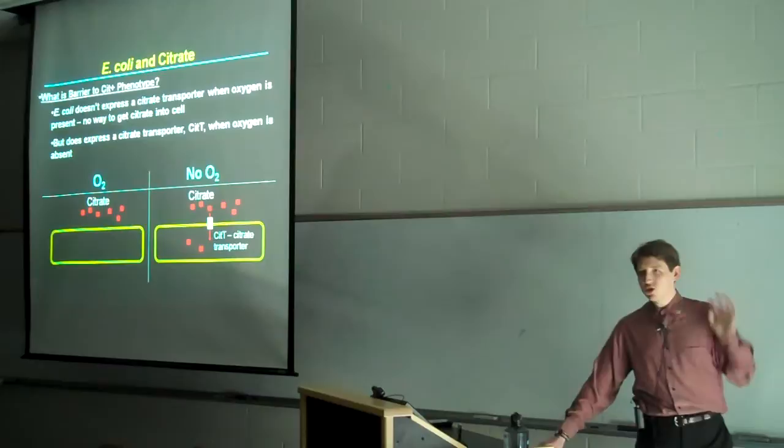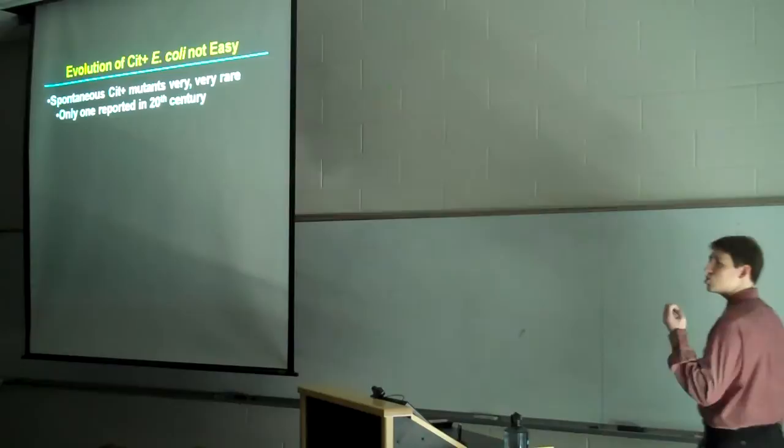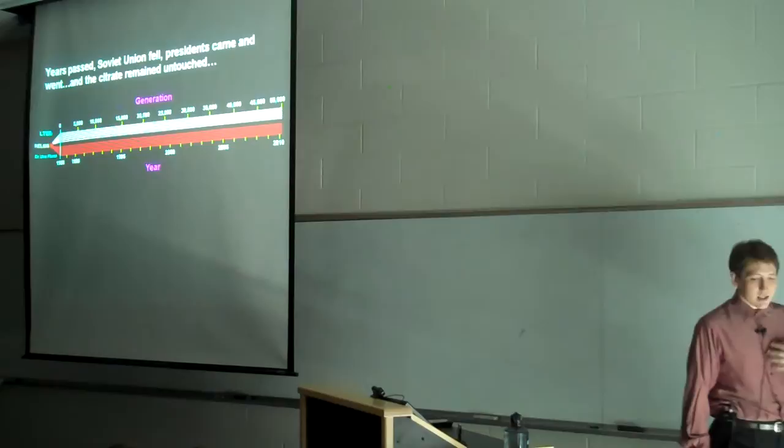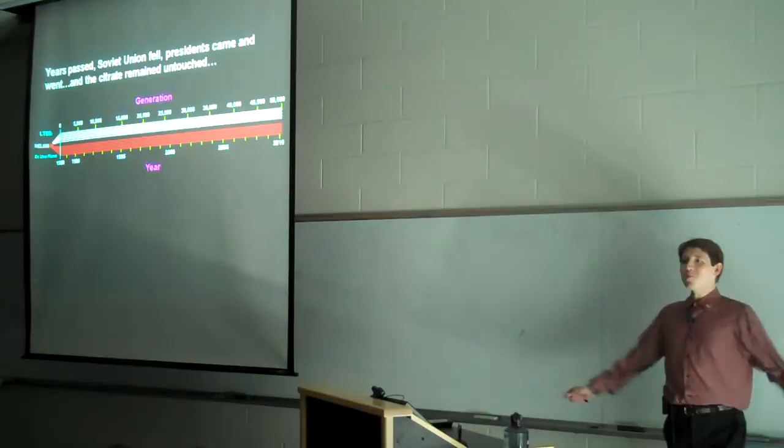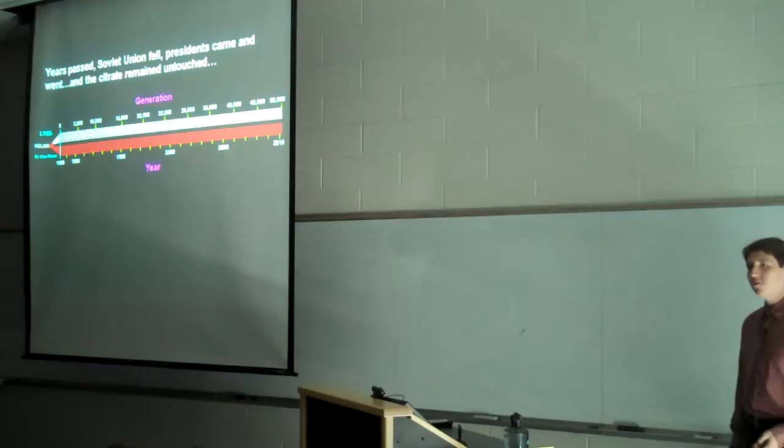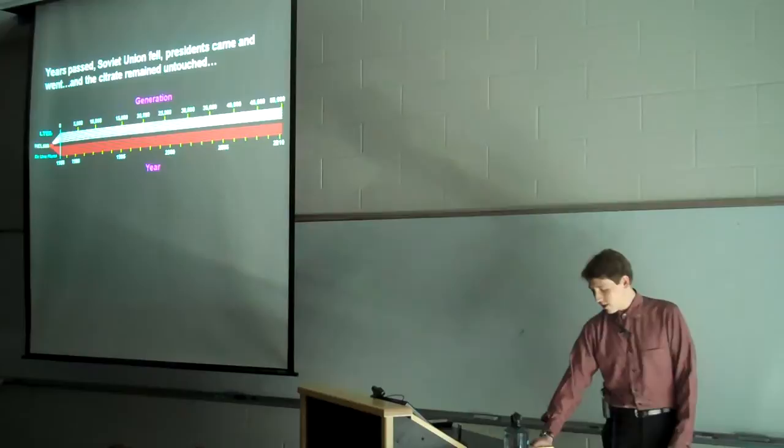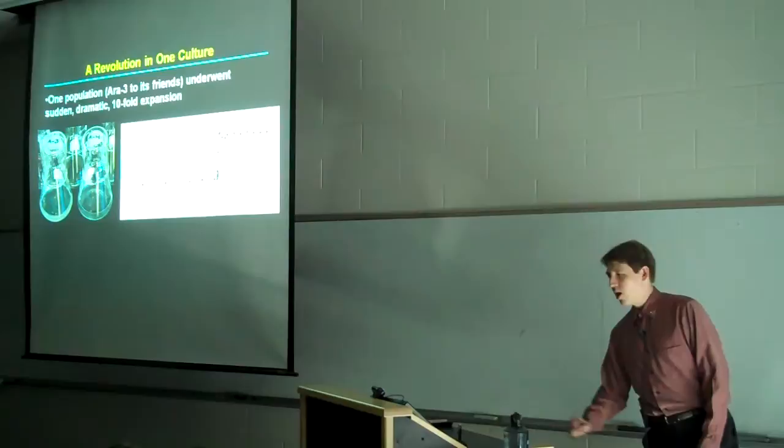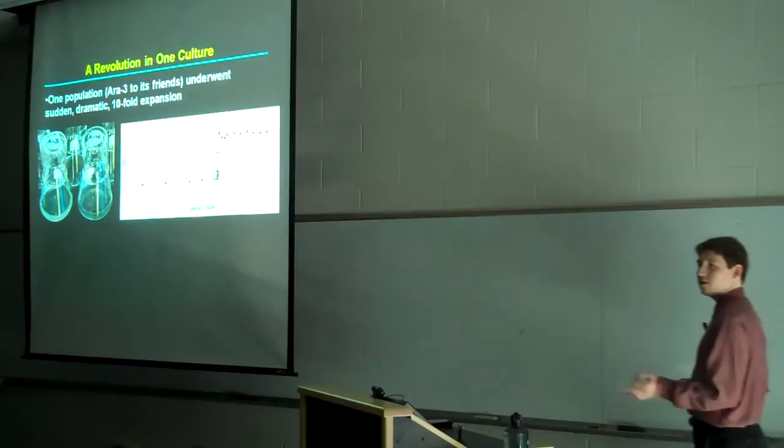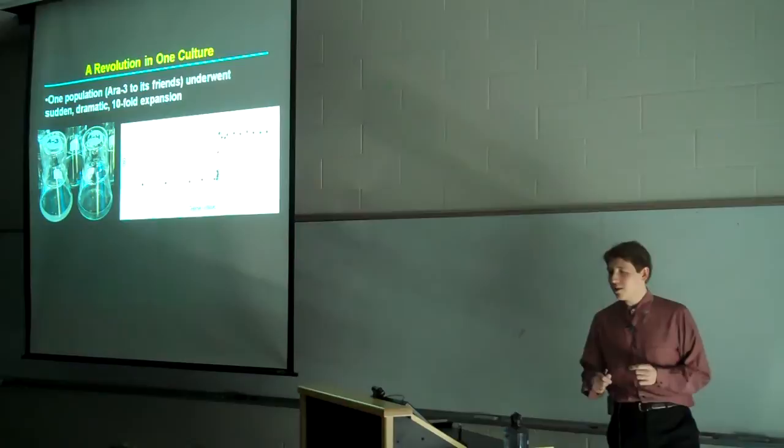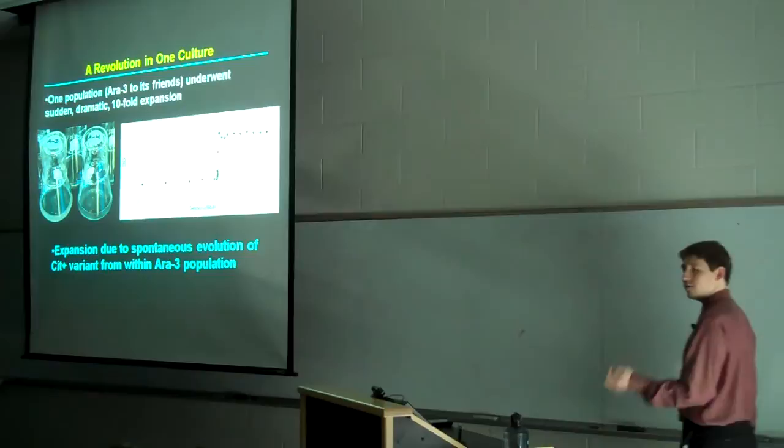So it seemed to be a very easy barrier to jump. Just activate that gene. It should be easy. It's not. Spontaneous Cit plus mutants of E. coli are extraordinarily rare. Only one was reported in the entire 20th century despite all the work that was done on E. coli in media containing citrate. Despite this, when Dr. Lenski started the experiment, there was some expectation that they'll figure out how to use it somehow. Well, years passed. Soviet Union fell. Presidents came and went. Dance fads came and went. The citrate remained untouched. And basically he gave up the hope. They won't do it. Then, 16 years in, in early 2003, something nifty happened. One population, called Ara minus three, underwent a sudden and dramatic tenfold expansion that was dramatic enough. That is much cloudier than the regular ones. It was remarkable.